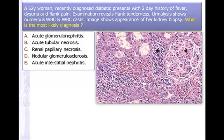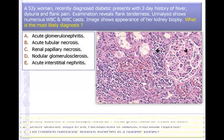52-year-old woman with diabetes, 3-day history of fever, dysuria, and flank pain — typical of urinary infection. Flank pain is more typical of kidney infection. Microscopy shows plenty of inflammatory cells in the interstitium and within the tubules. This is acute interstitial nephritis — inflammation of the kidney. Please also read about pyelonephritis and the difference between the two.